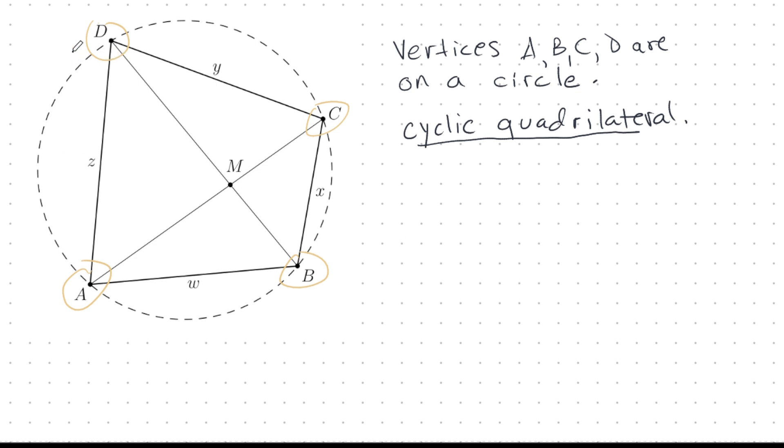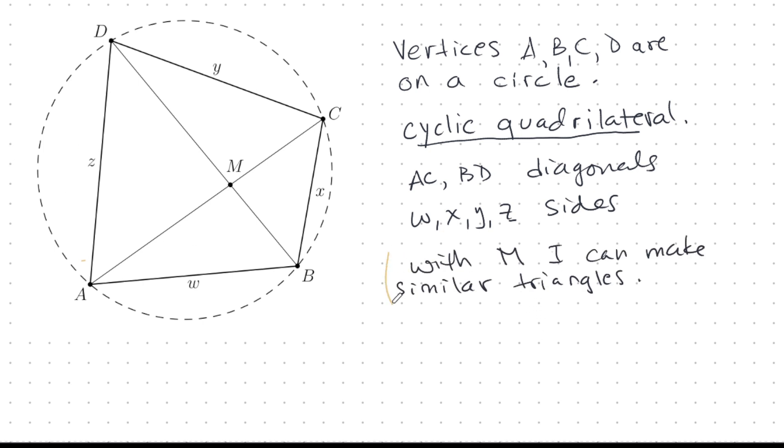So let's have a look at this carefully, and we see that there are two diagonals. We have AC and BD. I've just labeled it some way, and we've labeled the sides. So we have diagonals, and W, X, Y, Z are the sides, and M is the intersection point of the diagonals. Why do I need M? Well, with M, I can make similar triangles, and with these similar triangles, I will be able to prove Ptolemy's second cyclic quadrilateral theorem.